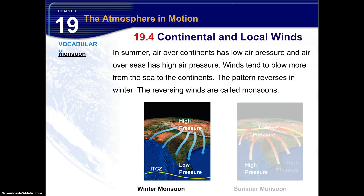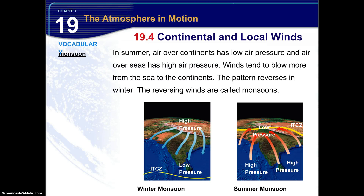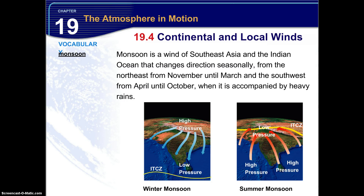There is a winter monsoon, and as you can see here, it goes from high pressure to low pressure, so the wind tends to travel to the south in this case. You can see the ITCZ is a lot lower. Then in the summer it reverses — the ITCZ moves up and the wind pattern reverses as well. Winds always travel from high to low. The monsoon is a wind of Southeast Asia and the Indian Ocean that changes direction seasonally: from the southeast from November until March, and from the southwest from April until October, when it is accompanied by heavy rains. While the term monsoon is used in other areas around the planet, technically speaking the monsoon only happens in Southeast Asia, though the reversing of air pressure and wind direction has become a general term used broadly.